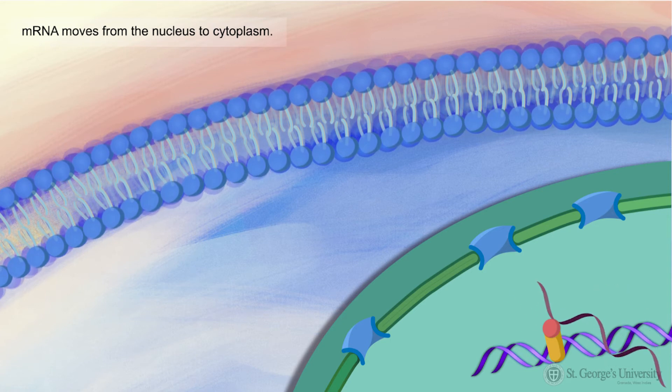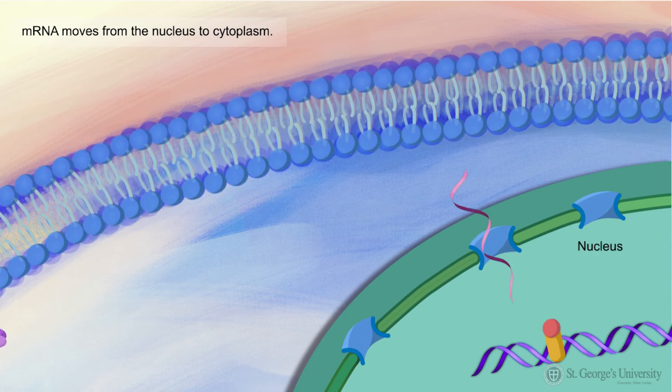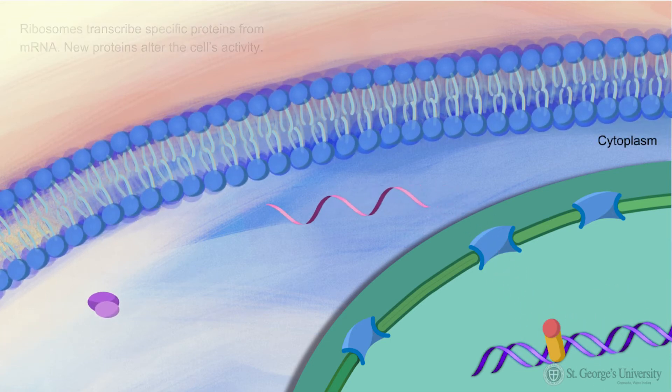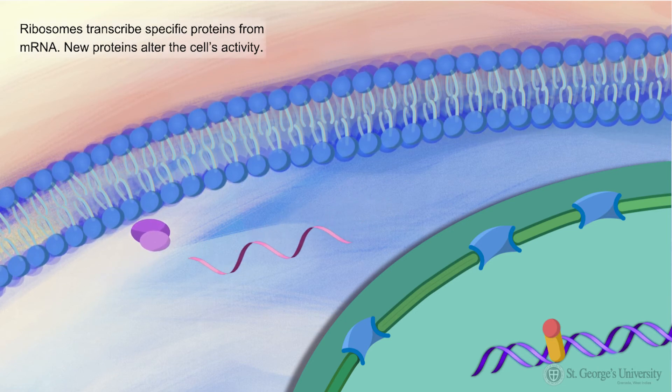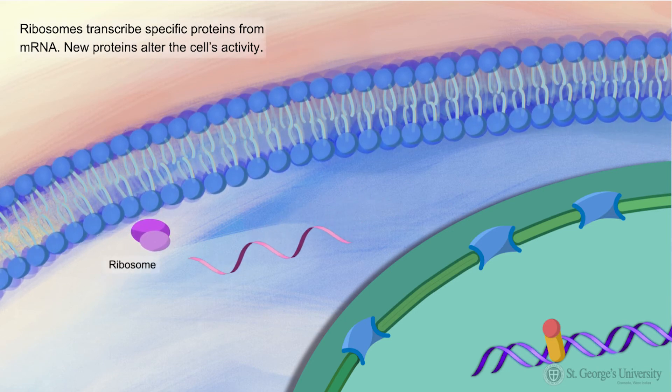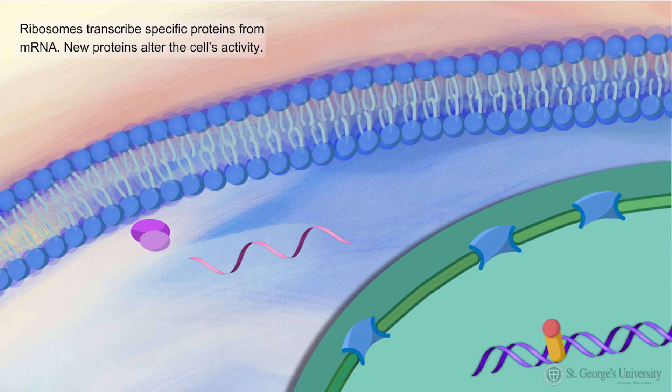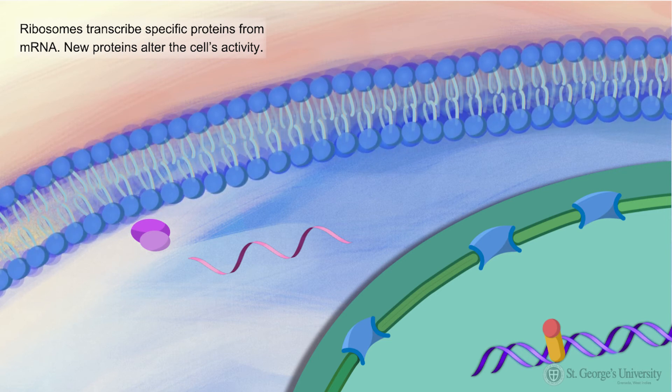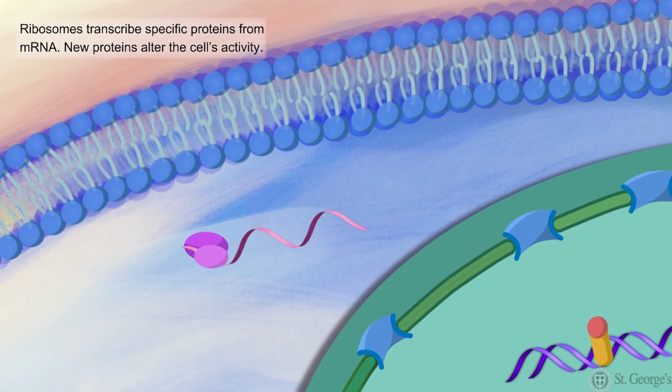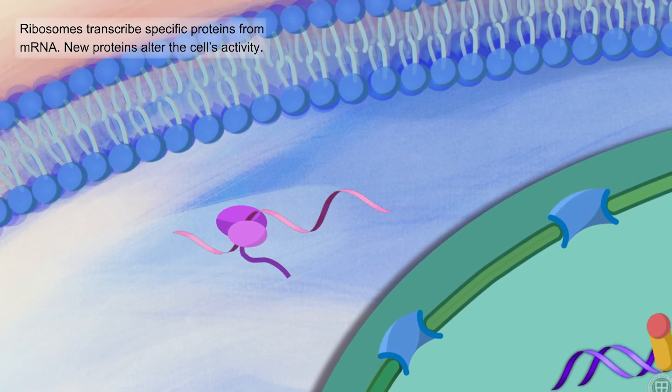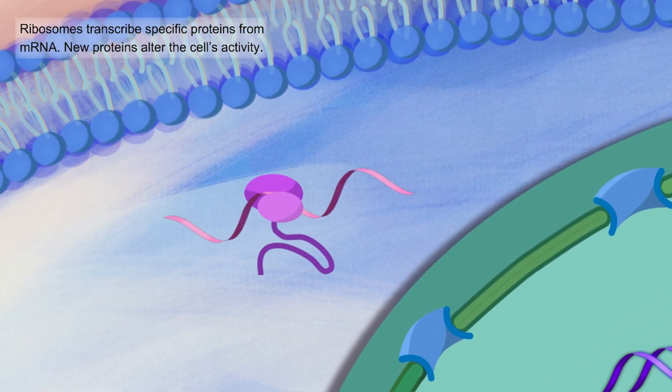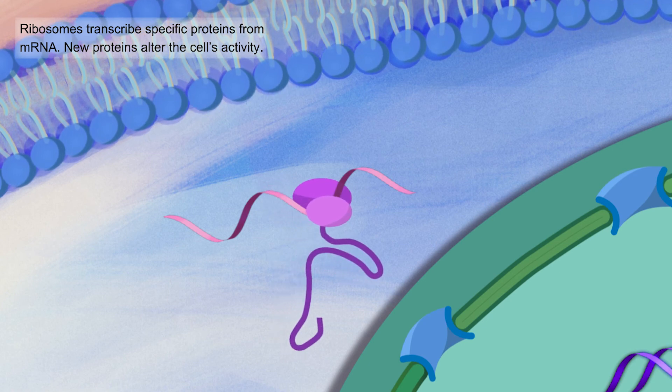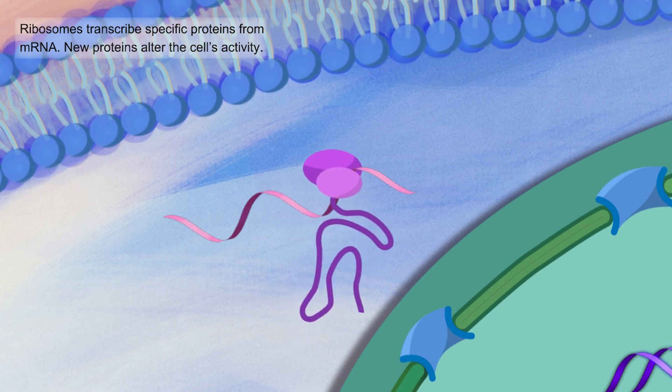Messenger RNA moves from the nucleus to the cytoplasm. This newly formed messenger RNA strand directs synthesis of specific proteins via the ribosomes. This long chain of amino acids emerges as a ribosome decodes the messenger RNA sequence into a polypeptide, which will eventually become a new protein.